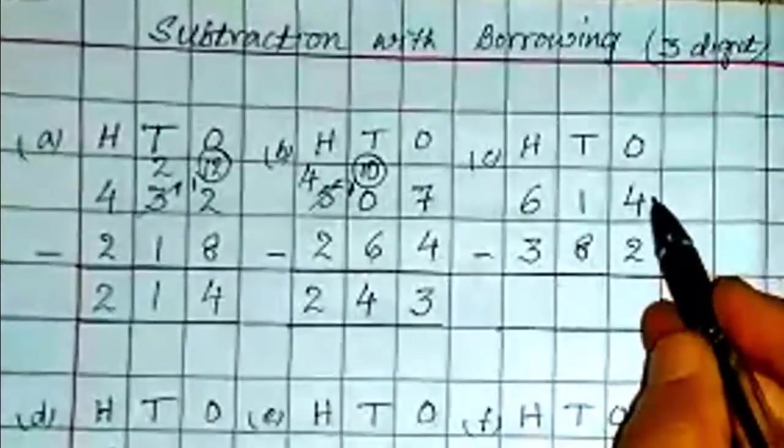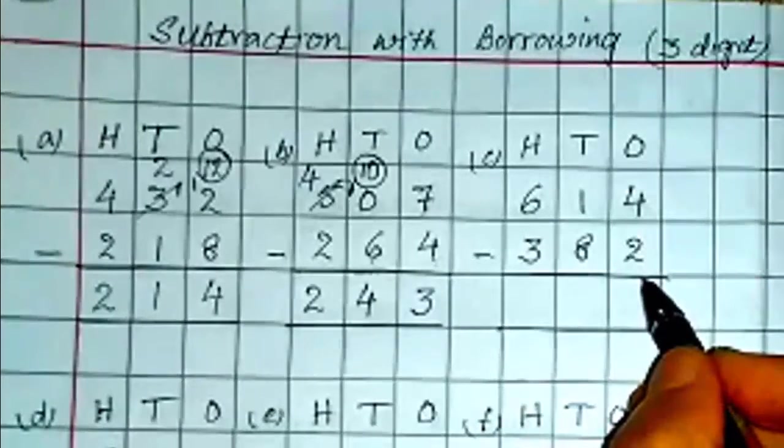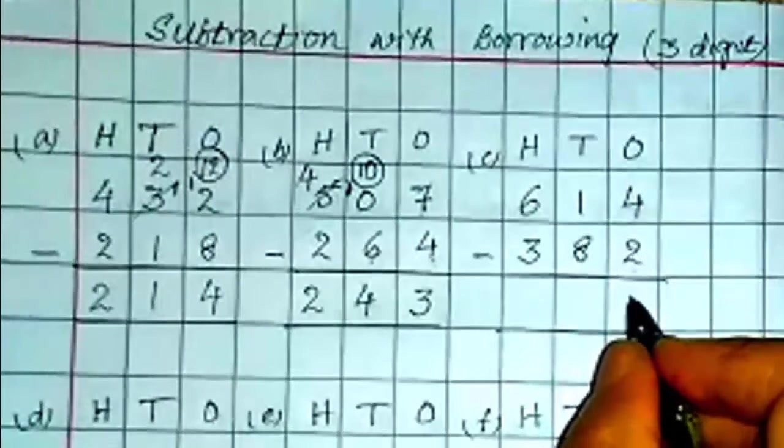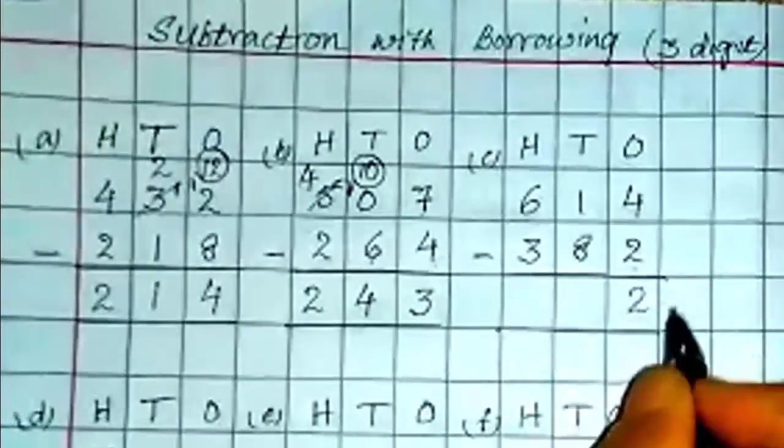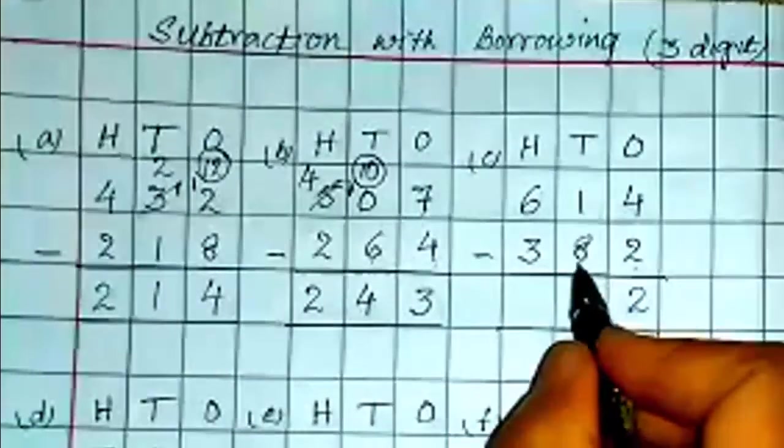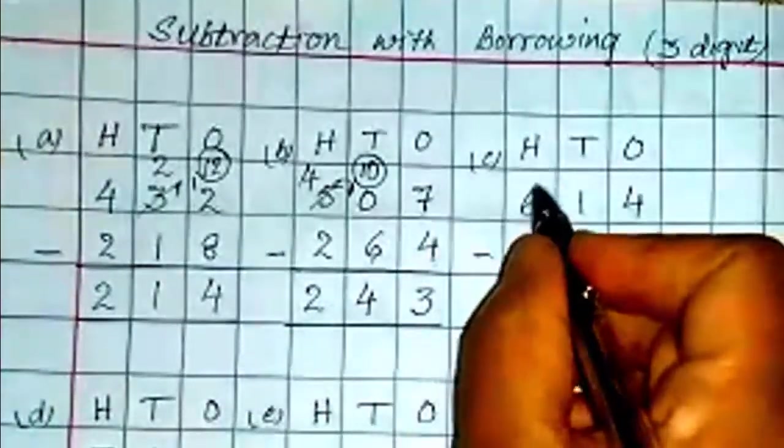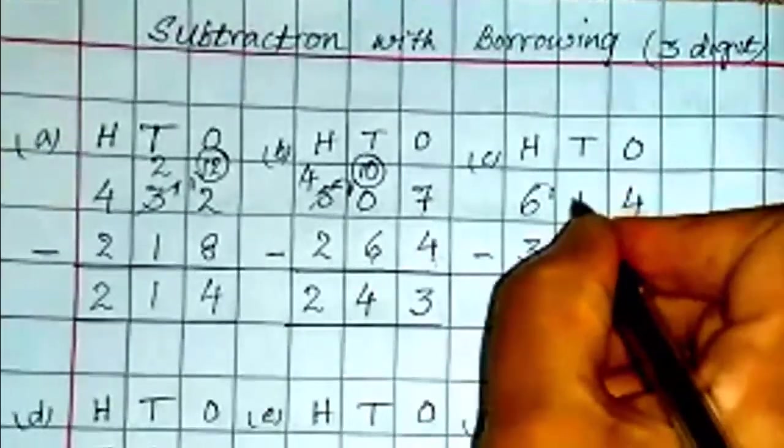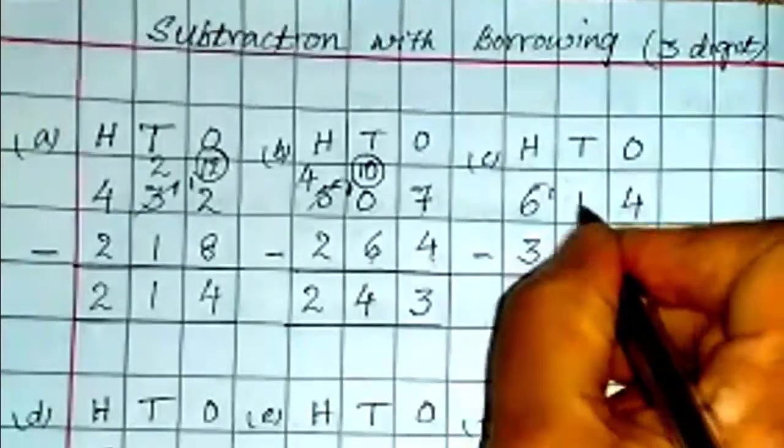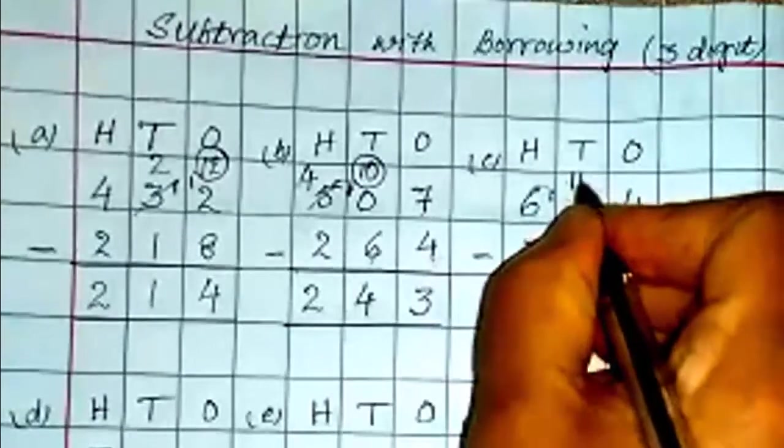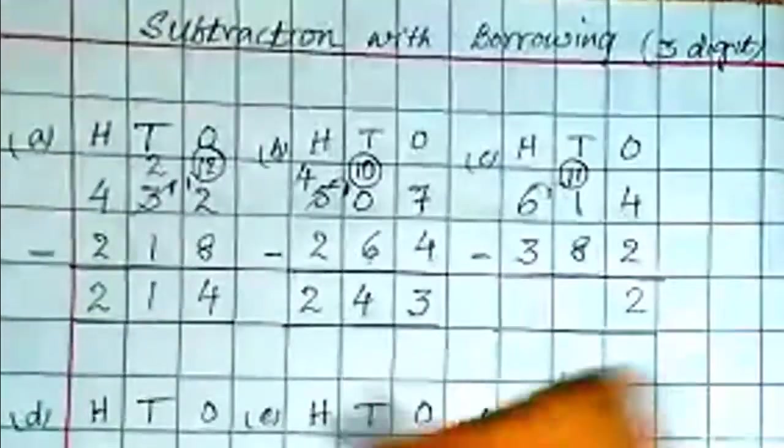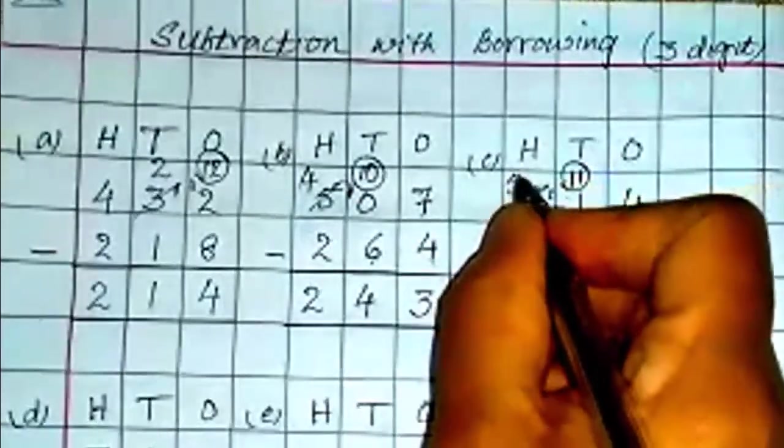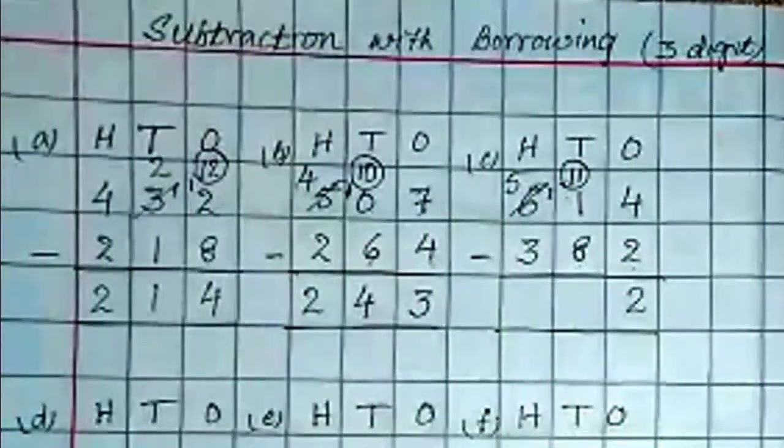Now here. On ones place you have 4 and 2. So 4 is greater than 2. So 4 minus 2 is 2. Now 1 is less than 8. So we need to borrow from hundreds place. That is 100 means 10 tens. So 10 plus 1 is 11 here, 11 tens. Now here it will be 1 less, that is 5. Got it, children?